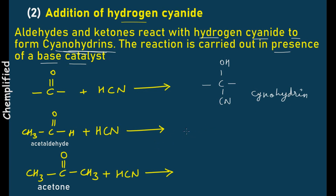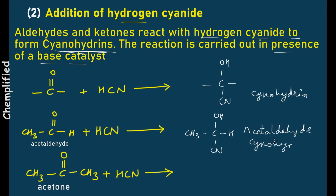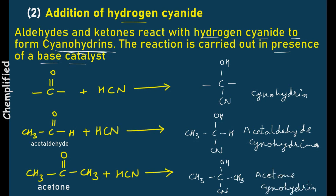When acetaldehyde is treated with hydrogen cyanide, you will get CH3C(OH)(H)(CN) — the name of the compound is acetaldehyde cyanohydrin. Similarly, when a ketone is treated with hydrogen cyanide, the product is acetone cyanohydrin. This is the general reaction for aldehydes and ketones with hydrogen cyanide.